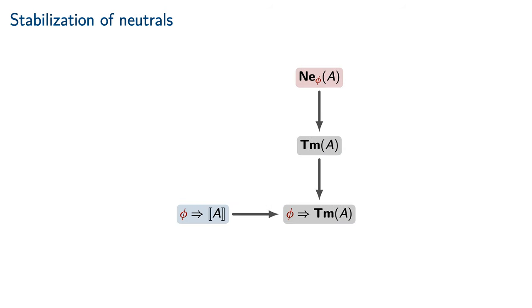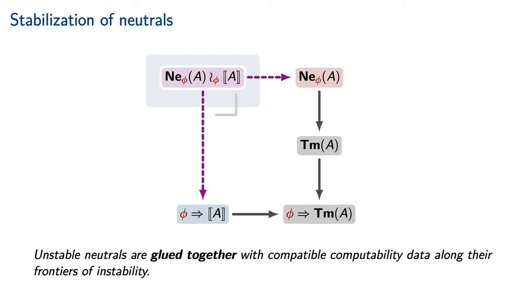it seems unlikely that this closure condition would be satisfied by the types of cubical type theory. In order to sufficiently strengthen our induction hypothesis, we must include in the input to our reflection map, in addition to an unstable neutral, a partial computability datum that is defined on that neutral's frontier of instability. We must moreover ensure that the partial computability datum is compatible with the neutral that it is glued onto, in the sense that they both restrict to the same underlying equivalence class of typed terms. This is achieved by taking a pullback that glues an unstable neutral form together with partial computability data along its frontier of instability.